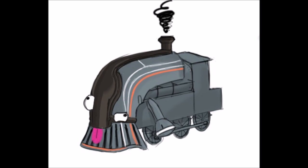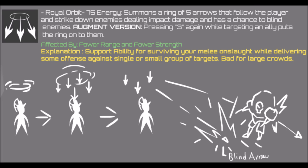Pollux's second ability is Royal Orbit. Once activated, Pollux creates a ring with 5 arrows over his head. Each arrow targets a different nearby enemy, applying impact damage and having a percent chance to blind. There is also an augment which allows the ring to be placed onto another player, similar to Nezha's Safeguard augment.